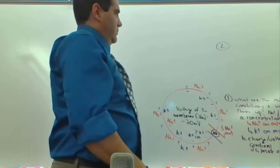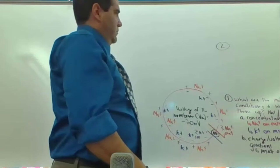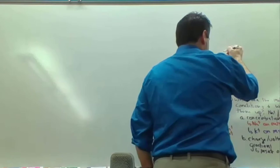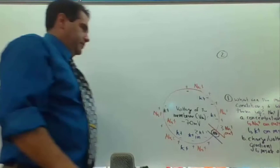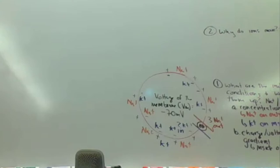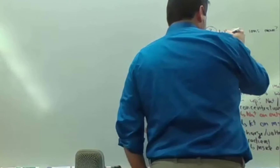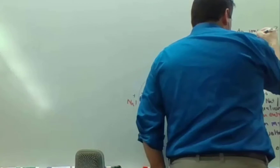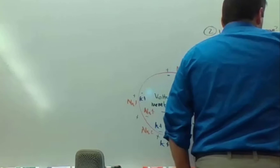Chapter two is: why do ions move? The answer is gradients. But you've got to be more specific than that, because there's a concentration gradient — also called a chemical gradient. You've got to get used to multiple terms for the same thing: concentration gradient, ion gradient, or chemical gradient are all the same thing.